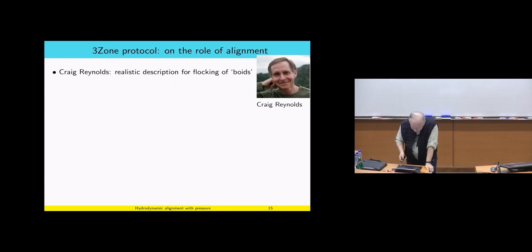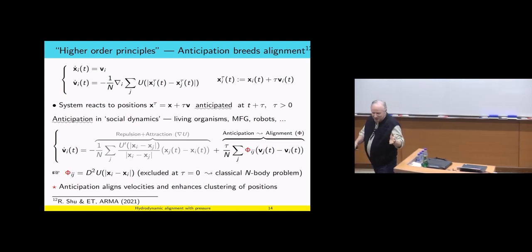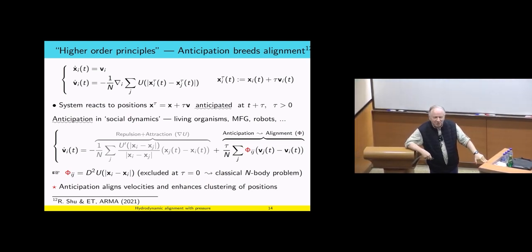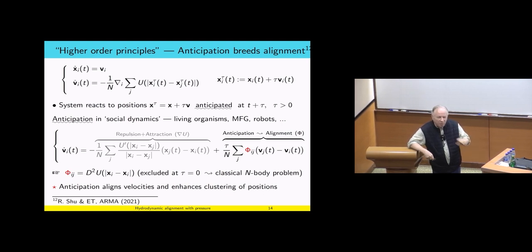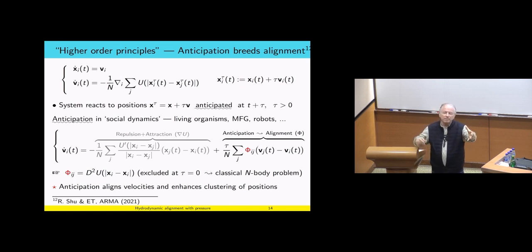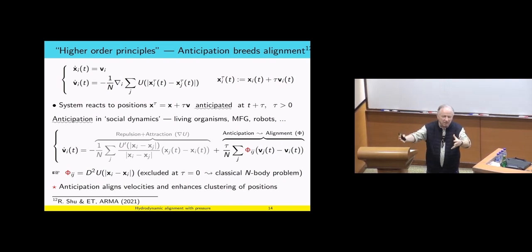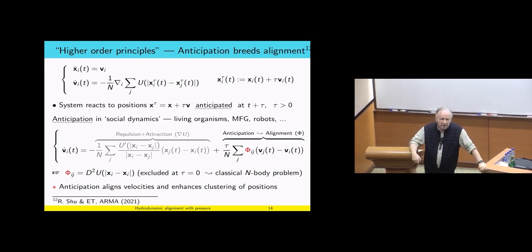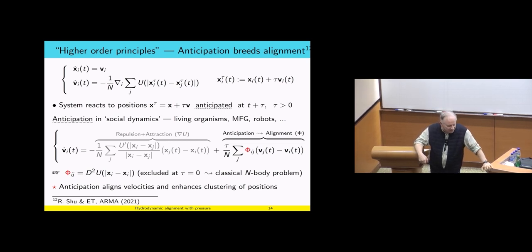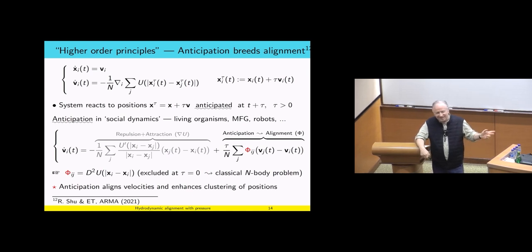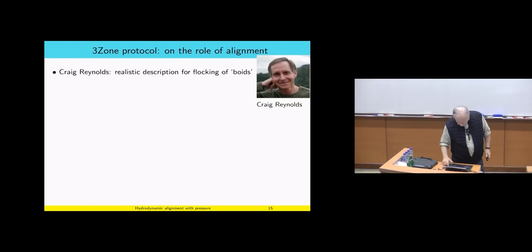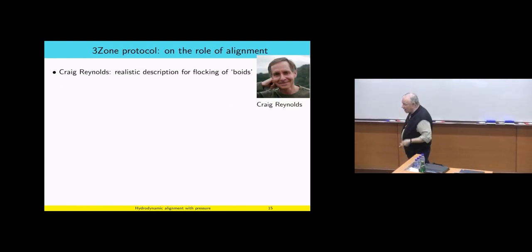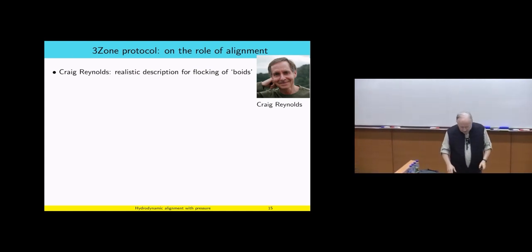Anticipation aligns velocities and enhances clustering of positions. The question which term dominates for large-time behavior is complicated because repulsion fights against the others and is the most complicated aspect. When you have alignment and attraction, they work together. This model with repulsion, attraction, and alignment was introduced in 1987 by Craig Reynolds when he wanted a realistic simulation for flocking of what he called boids — bird-like objects.